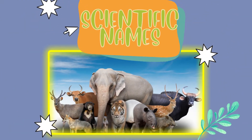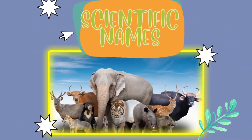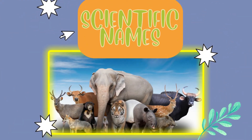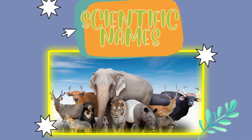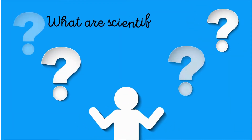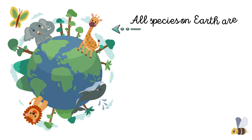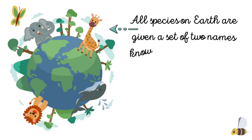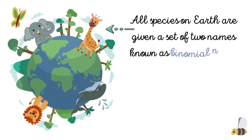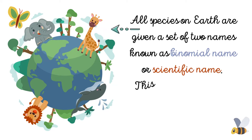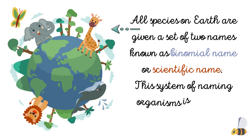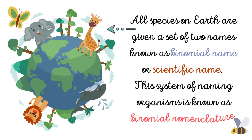In this video we will learn about scientific names. All species on Earth are given a set of two names, known as binomial name or scientific name. This system of naming organisms is known as binomial nomenclature.